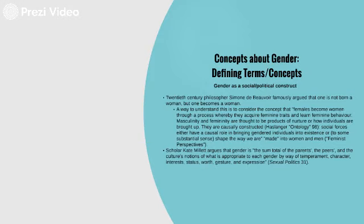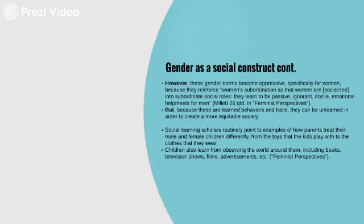Social forces have a causal role in bringing gendered individuals into existence. These social ideas about what gender means can mean something different in Japan, something different in Nigeria — those are all learned behaviors. Kate Millett, a second wave feminist scholar, argues that gender is the sum total of the parents', the peers', and the culture's notions of what is appropriate to each gender. Those are all taught and passed down.